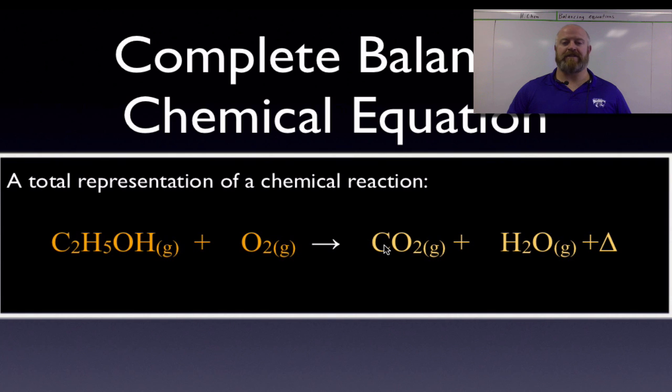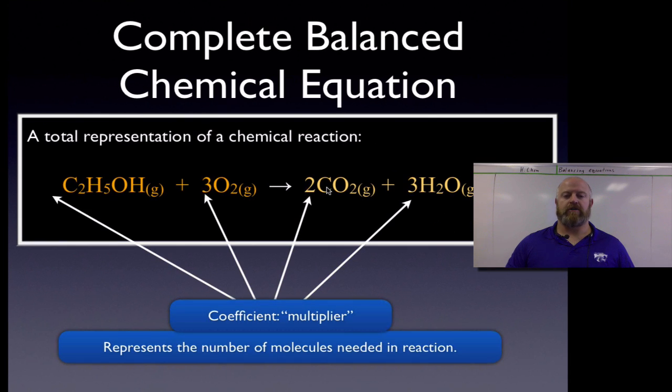To do that, we put numbers out front that we call coefficients. So in this step now, we notice how we put some numbers out front. These are our coefficients. The coefficient is basically a multiplier. We're saying that everything in this compound, we now have multiplied by two. What it represents for us is the number of molecules needed to make the equation balanced.